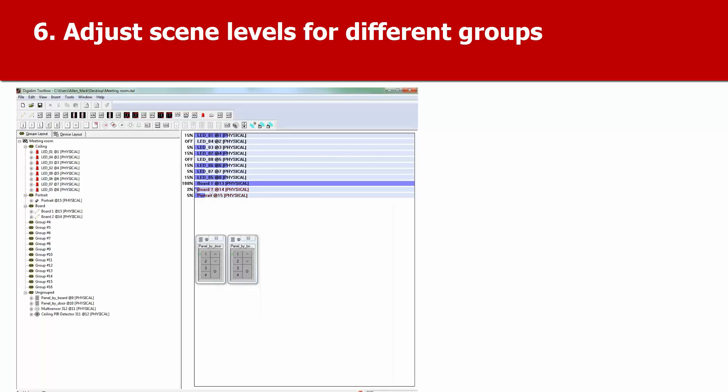And we'll turn the board lights off, 0%. When you're happy with these levels, and don't forget that Toolbox makes it very easy to adjust them slightly to exactly how you want them, then we'll store them as a lighting scene.